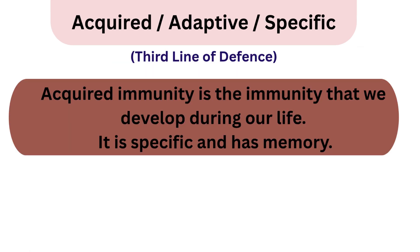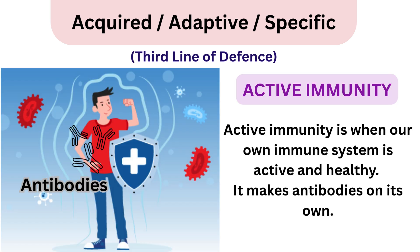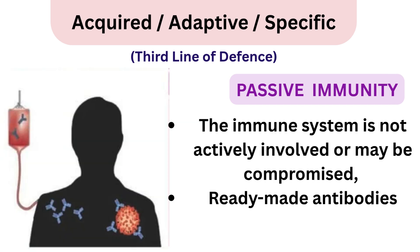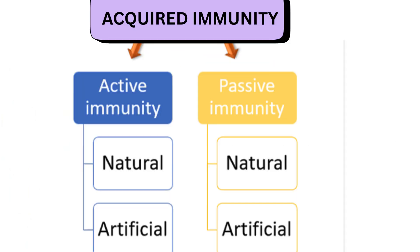The second type is acquired immunity — the immunity we develop during our lifetime. It is specific and has memory. It is of two types: active and passive. Active immunity is when our immune system makes antibodies on its own, while passive immunity is when our immune system is weak and we receive ready-made antibodies from outside. Both active and passive immunity are further divided into natural and artificial types.